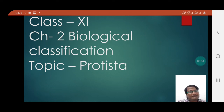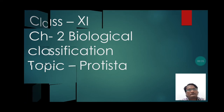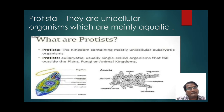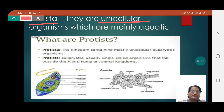Good morning, students of Standard 11. Today we are going to discuss a very important topic — Protista — from Chapter 2, Biological Classification. Protista are unicellular organisms which are mainly aquatic. They are those groups of organisms which are unicellular, that is, made up of a single cell.